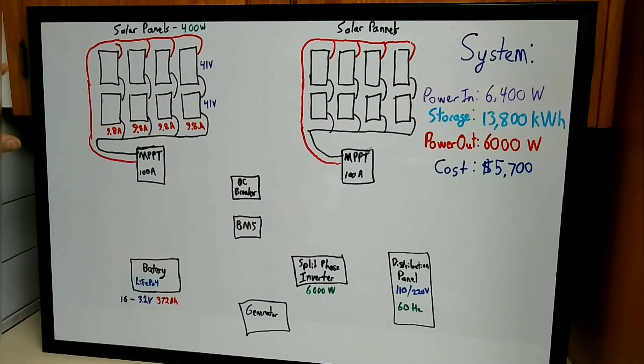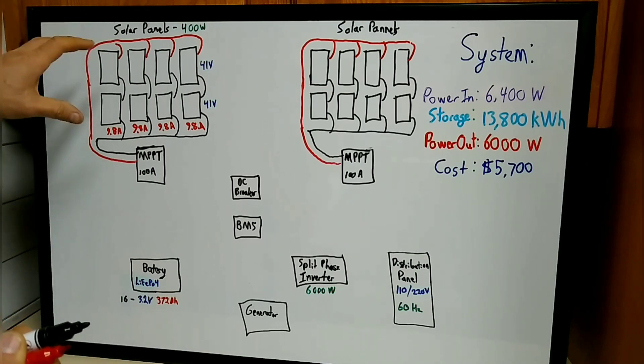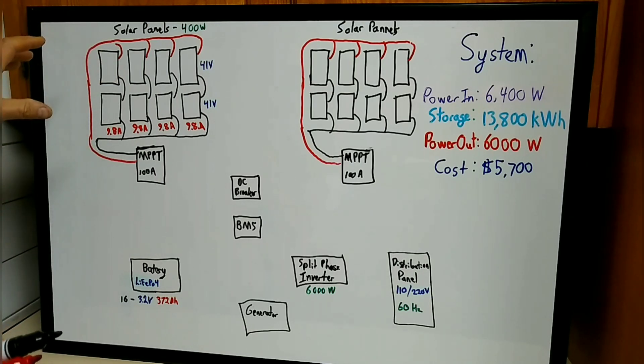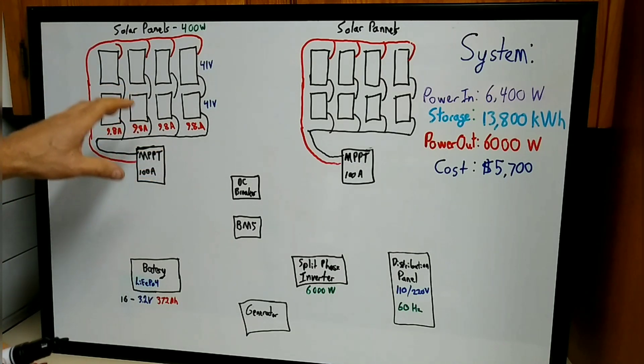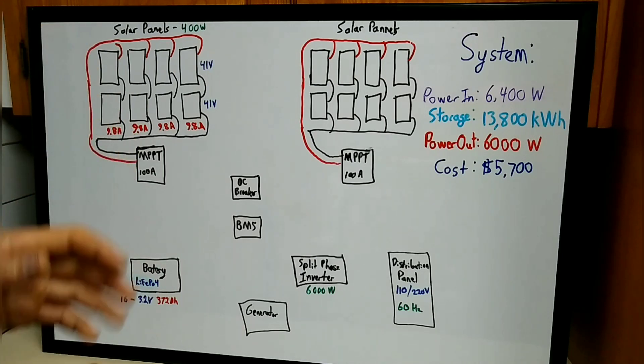The electricity coming in from your solar panels is going to vary constantly, depending on time of day, amount of shade, how clean they are—tons of factors. The amount of output your solar panels are generating is constantly changing. All that comes into your controller, and your controller regulates all that power and gets it ready to go to the next stage of the system.